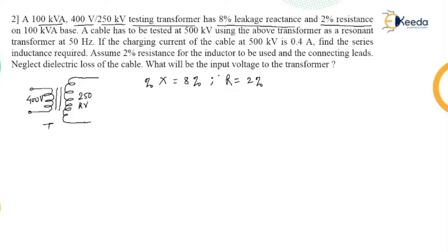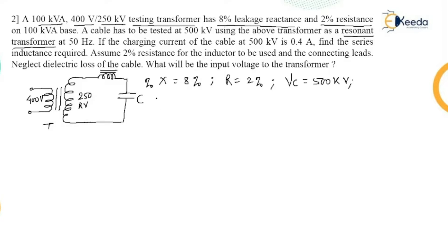This 100 kVA cable has to be tested at 500 kilovolt, meaning we connect a cable with 500 kilovolt across it, using this transformer as a resonant transformer. In a resonant transformer, one inductor is connected with the capacitor — the capacitor being the test specimen — and the voltage across it is Vc = 500 kilovolt. There is a variable choke coil (inductor) at 50 Hz, and at resonance: XL = Xc.